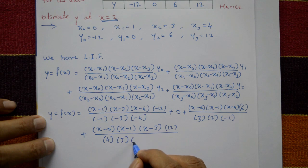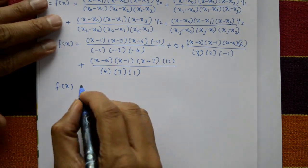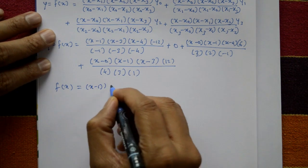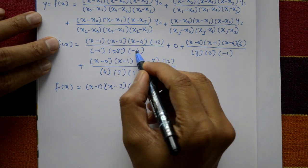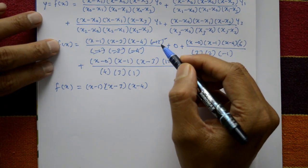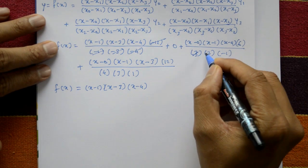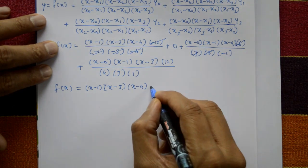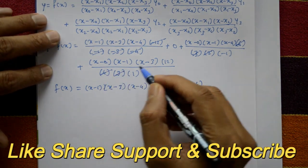Now f(x) equals: the first term has (x minus x1)(x minus x2)(x minus x3) with denominator values minus 1, minus 3, minus 4 and numerator minus 12 — the minus 12 values cancel. The second term is 0. The third term gives 2 into 3 equals 6, and 6 cancels, leaving a minus sign: minus x(x minus 1)(x minus 4). The denominator 4 into 3 is 12.